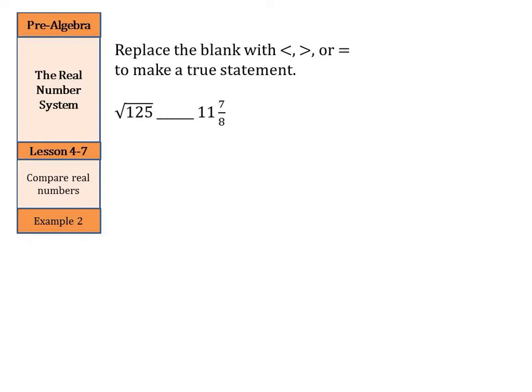Replace the blank with a less than, greater than, or equals to make a true statement. We have the square root of 125, and we have 11 and 7 eighths. Well, if we use our calculator, we can get the square root of 125 to be about equal to 11.1803, and it keeps going. And 11 and 7 eighths, well, that's 11 point, if we do 7 divided by 8 in our calculator, we would get 875. So which is bigger, 11.18 or 11.87? There's our less than sign. So the square root of 125 is less than 11 and 7 eighths.